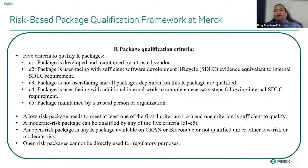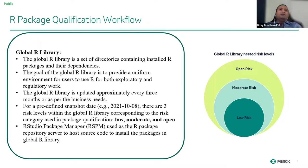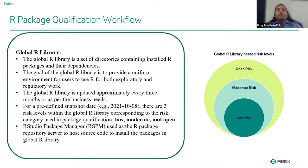We've defined five criteria for package qualification. A low risk package needs to meet at least the first four criteria (C1 to C4), and one criterion is sufficient to qualify it. A moderate risk package can be qualified using any of C1 to C5. Open risk is any package available on CRAN or Bioconductor that is not qualified under low or moderate risk. Our guidance specifies that open risk packages cannot be directly used for regulatory purposes — this is already part of our standard operating procedure.